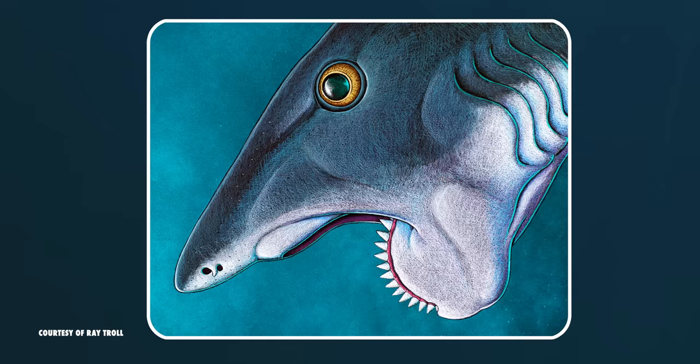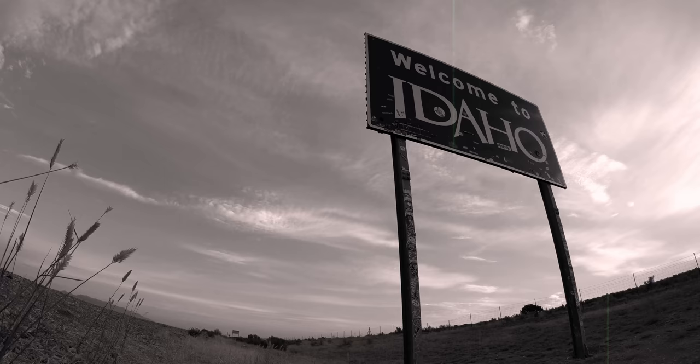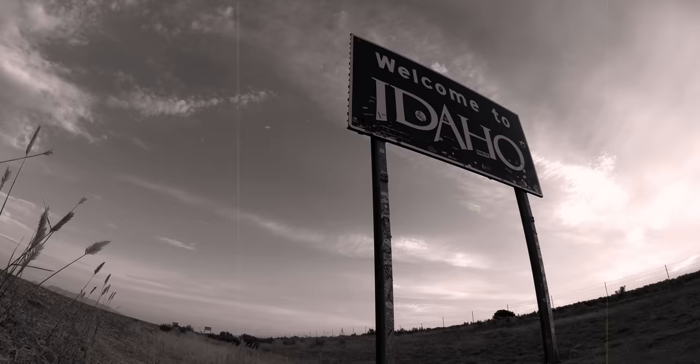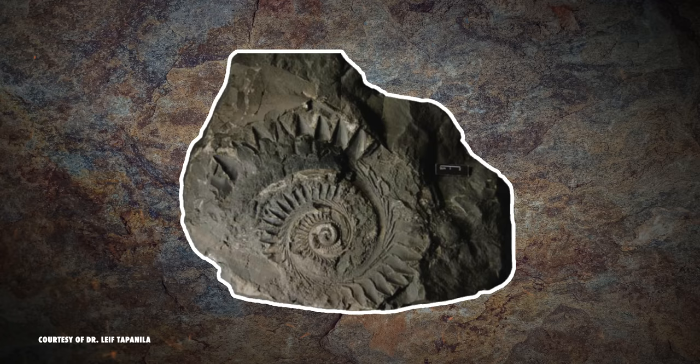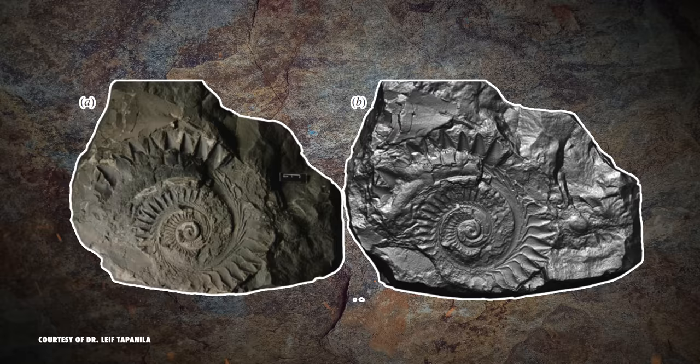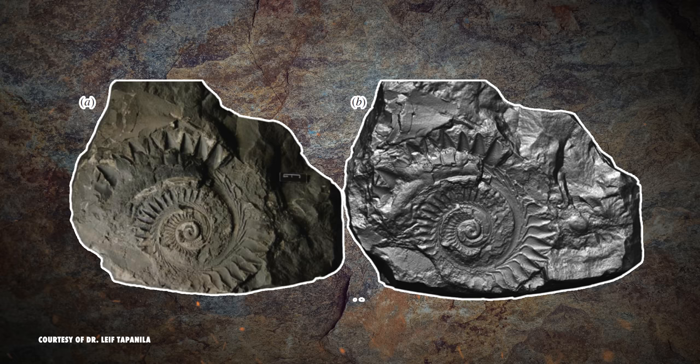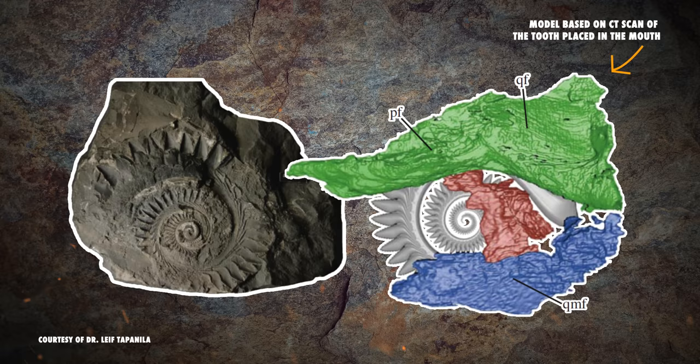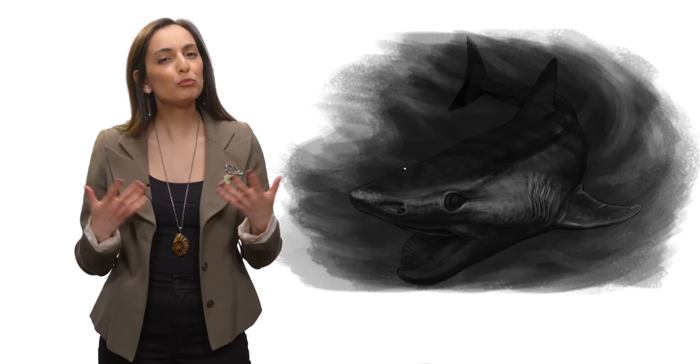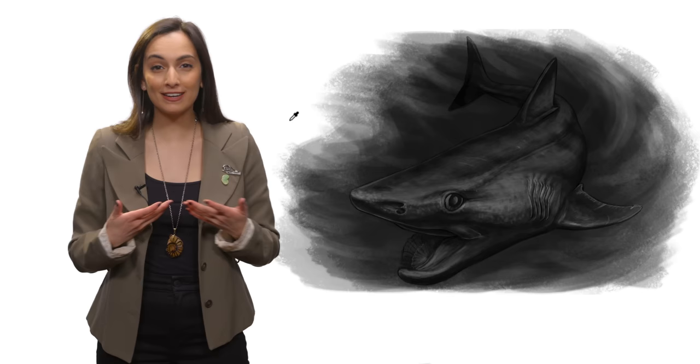What we understand today about Helicoprion can be attributed to the fossil of a crushed individual, which was found in 1950 in Idaho. This whirl has a diameter of 23 centimeters and contains 117 serrated teeth. It's the only example we have where the endoskeletal elements around it remained intact. Today, we're pretty sure that Helicoprion's toothy swirl was located in its lower jaw and was likely used for feeding. We also know that this whirl had a handful of novel adaptations that made Helicoprion truly unique.